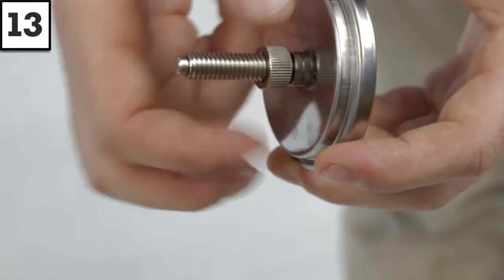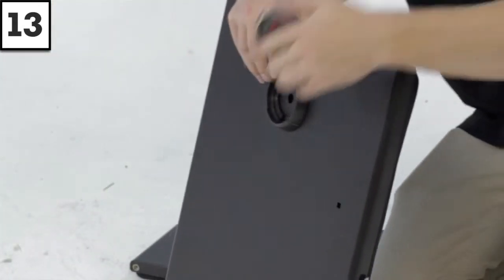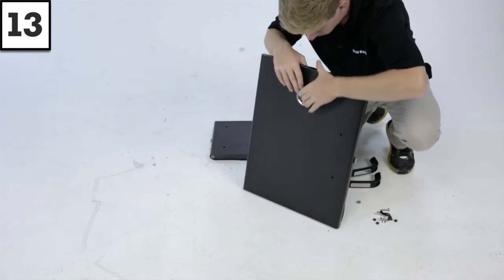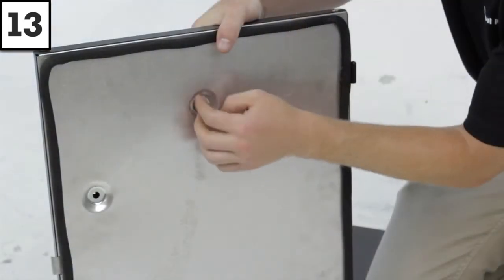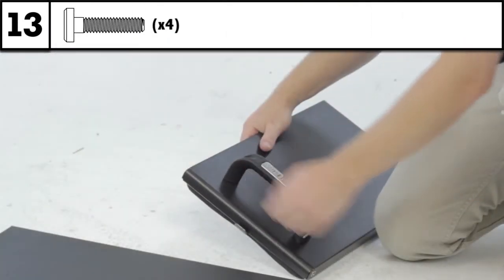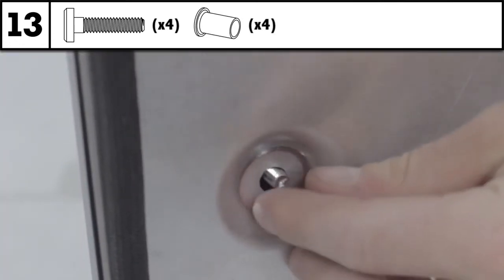Step 13: Attach the temperature gauge and bezel. Complete the upper and lower door assemblies by installing the door handles with bushings and wing nuts.